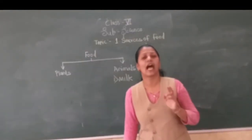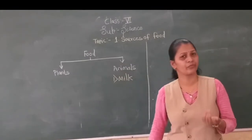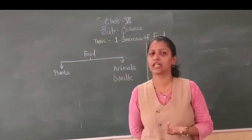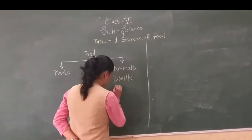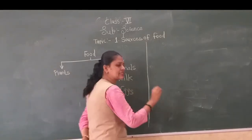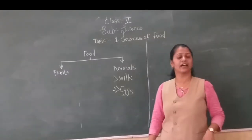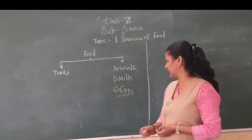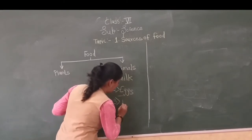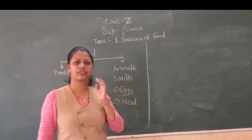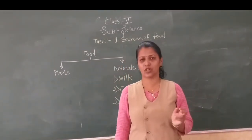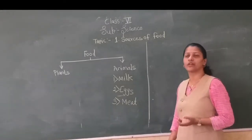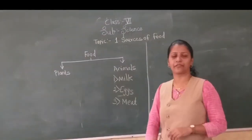What else do we get from the animals? We get eggs. From which animals do we get eggs? From hen. Eggs are a very rich source of protein. We also get meat from animals. Some students might be eating chicken. Chicken is also a source of protein. Meat we get from the hen.